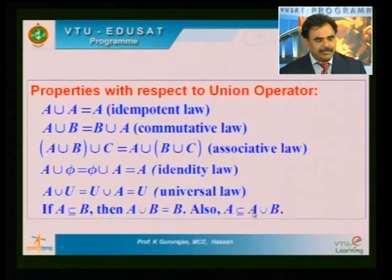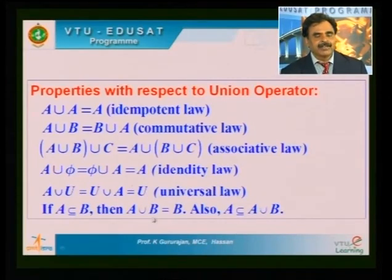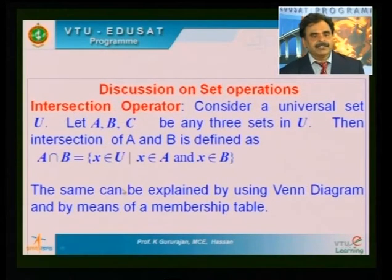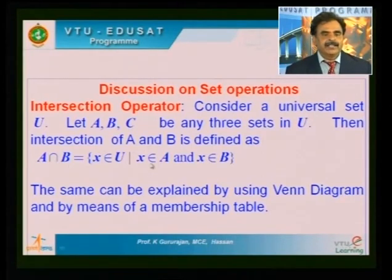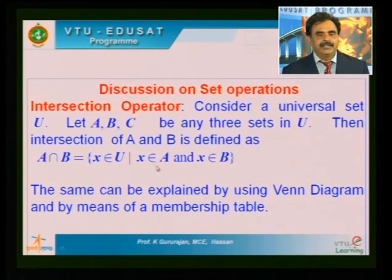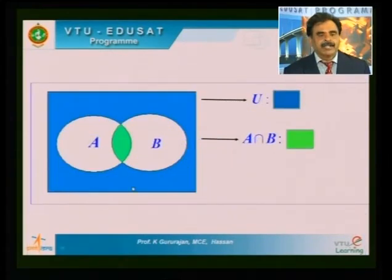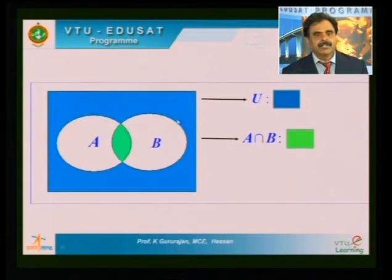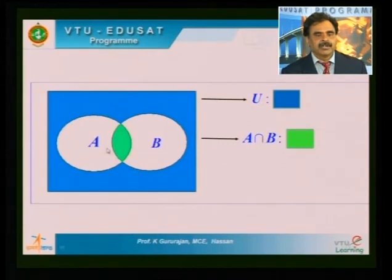We have seen several properties of the union operator, making sets with union a discrete structure. Coming to the intersection operator: A intersection B consists of all elements common to A and B. In the Venn diagram, the portion common to A and B — colored green — represents A intersection B.